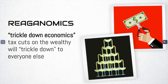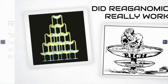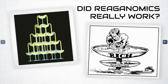Reaganomics is the idea that if you cut the taxes of the wealthiest Americans — those people at the very top percentage of the country — that money saved then trickles down to everybody else. So Reagan's plan was for those wealthy Americans to use the money saved from this tax cut to reinvest in their businesses, therefore supporting other people.